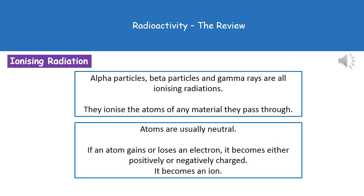As we've already said, we've got alpha, beta, and gamma, which are all ionizing radiations. What that means is that they're going to ionize the atoms of any material they pass through. And remember by ionize we mean it's going to become charged. So atoms are usually neutral, but in the instance that we've got this ionizing radiation passing by, it's either going to make that atom gain or lose an electron, making it become either positively or negatively charged, therefore making it an ion.